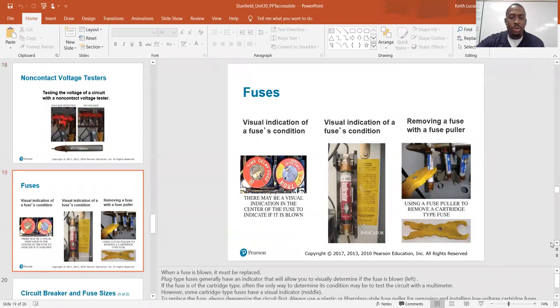Fuses. When a fuse is blown, it must be replaced. Plug-type fuses generally have an indicator that will allow you to visually determine if the fuse is blown. If the fuse is of the cartridge type, often the only way to determine its condition may be to test the current with a multimeter. However, some cartridge-type fuses have visual indicators.